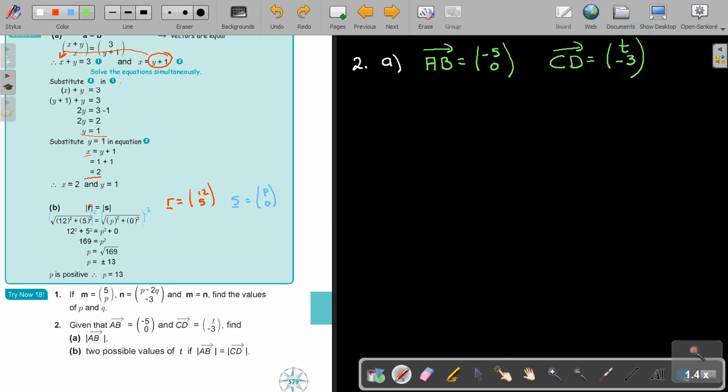And then if I find AB, the magnitude of AB, it's just going to be negative 5 squared plus 0 squared, and that is going to be 25. And if I'm going to work it out, it's just going to be 5. That's the magnitude.